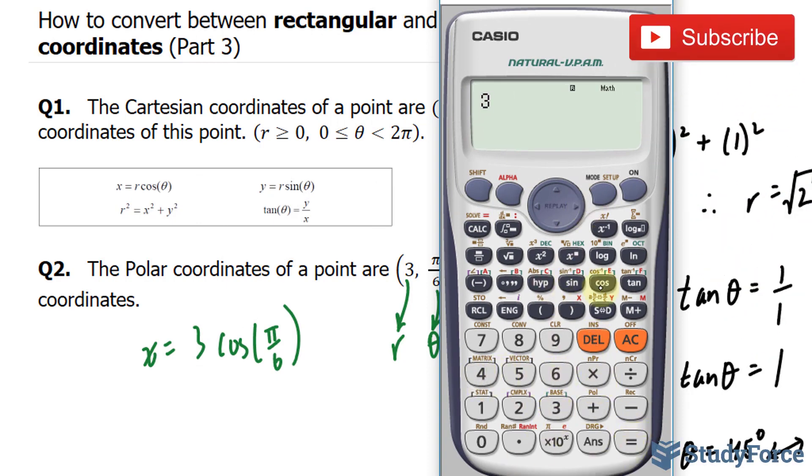I have 3 times cosine pi over 6. That gives me 3 times the root 3 over 2, which is 2.59, although I prefer this.